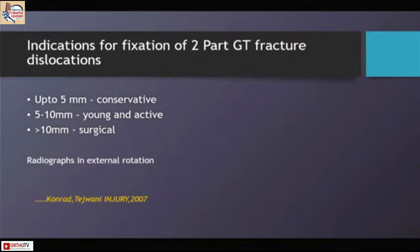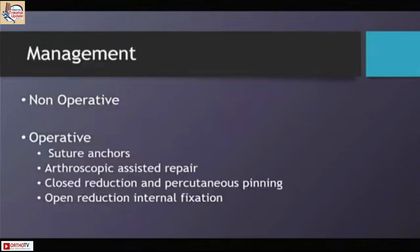If the displacement is more than 10 mm we always try to fix it; if it is less than 5 mm we go for conservative management. Between 5 and 10 mm, in young and active patients, we tend to fix these fragments. X-rays in gentle external rotation help predict whether fragments will displace in the future. Fixation for large fragments uses a combination of plates and screws, and it is always useful to augment fixation with suture anchors or sutures.